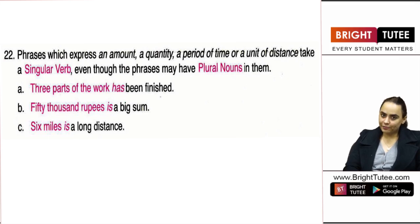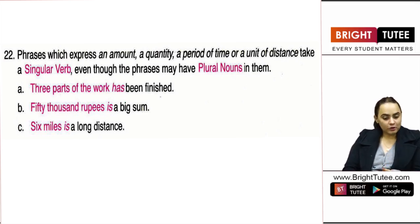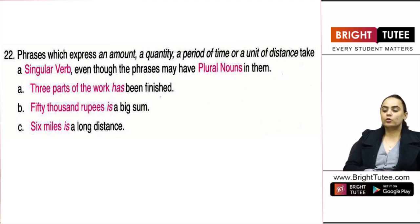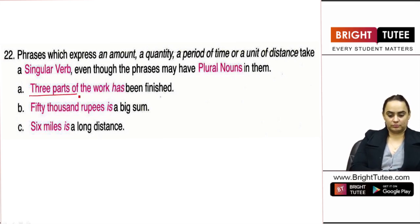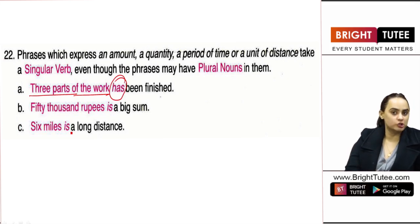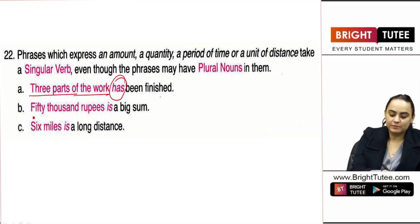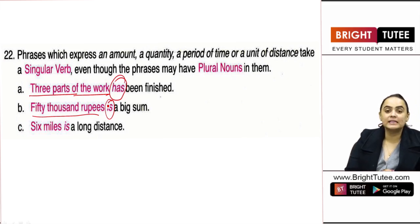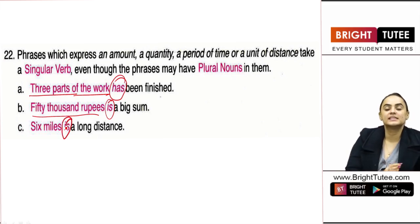The next rule says if in a phrase we are talking about some amount, quantity, period of time, or unit of distance taken in totality, we use a singular verb. For example: 'three parts of the work has been finished' — although three parts is plural, it talks about a quantity. '50,000 rupees' — rupees is plural but since it talks about an amount, it takes a singular verb. 'Six miles' — miles is plural but talks about a unit of distance, therefore it is singular in nature.